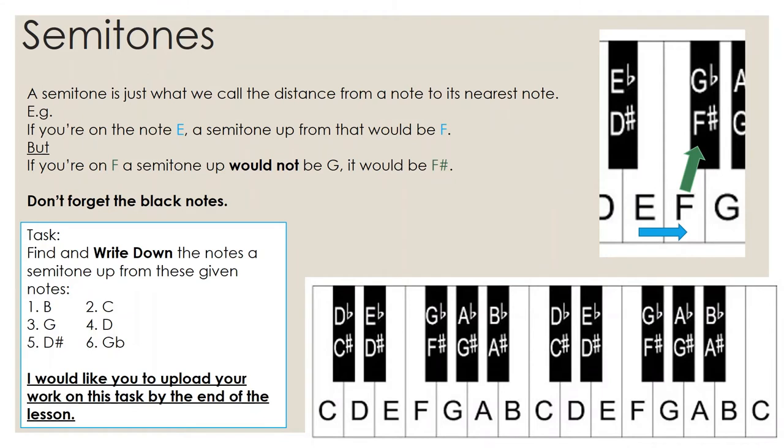Now, semitones. What is a semitone? A semitone is basically what we call the distance from one note to its nearest note. So for example, if we've got the note E, a semitone up from E would just be F because it's the closest note to E. With that, you need to keep in mind the black notes because they are still notes. So if we have F, a semitone from F would not be G because you've missed out the closest note to that, which is actually F sharp. So you need to keep that in mind when it comes to working out which is a semitone.